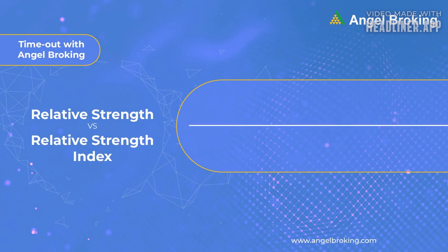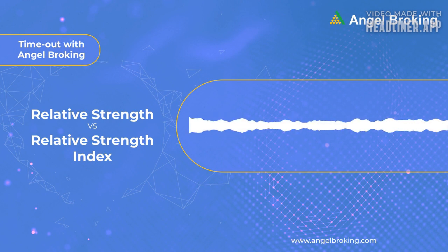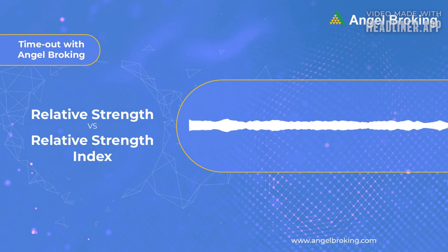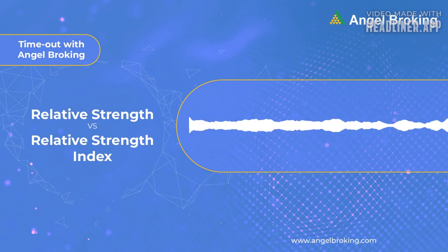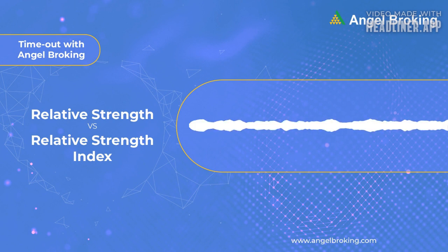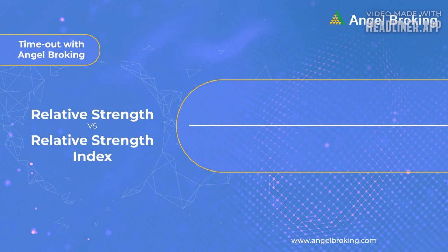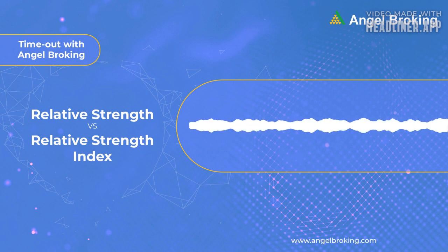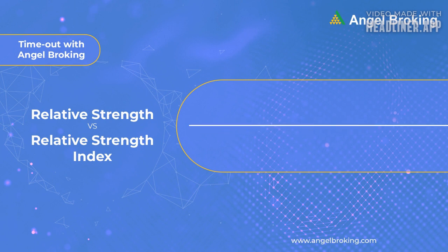On the other hand, RSI, or Relative Strength Index, is an indicator that helps you determine if a security is overbought or oversold. RSI is a momentum indicator. But before seeing why and how, let's quickly revisit how RS works.